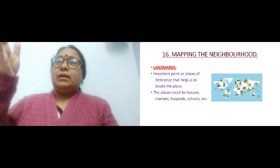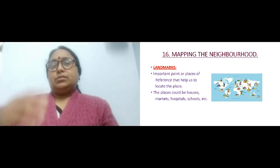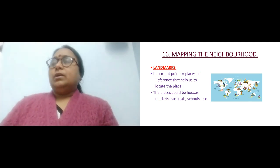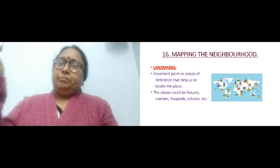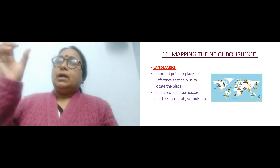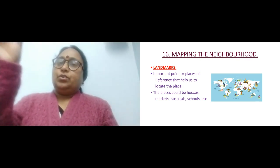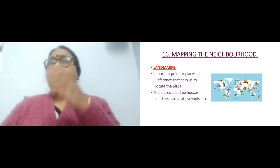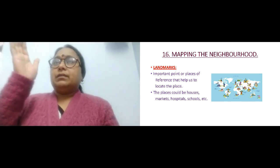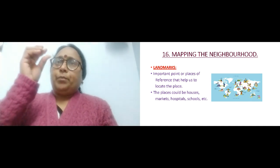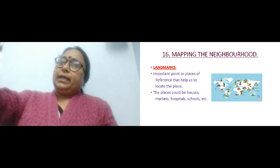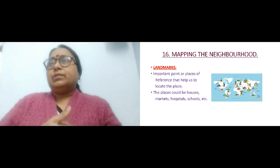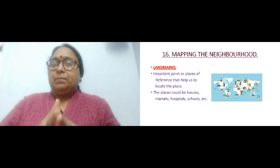You have Big Ben, the famous clock in the UK — United Kingdom or England. You have the Eiffel Tower, which is in Paris, France. The Statue of Liberty and the Leaning Tower of Pisa, which is in Italy — all these important buildings or places represent the country instead of writing its name, so you can easily find the country on the world map.